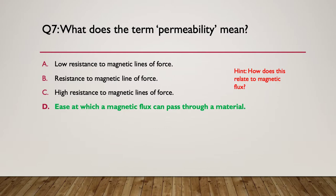Resistance to magnetic lines of force can be a characteristic of permeability, but doesn't describe it. High resistance to magnetic lines of force can also describe permeability, but doesn't define it. So D is the best answer — the ease at which a magnetic field can pass through a material.